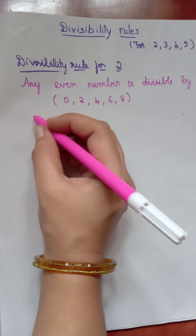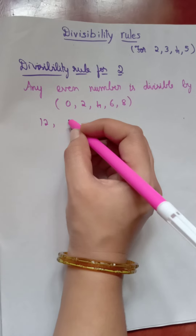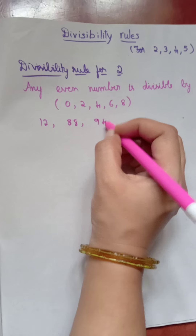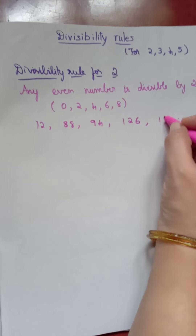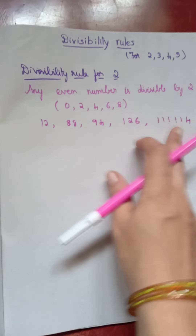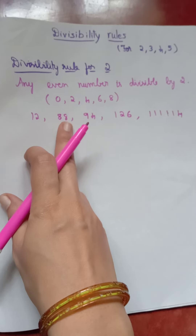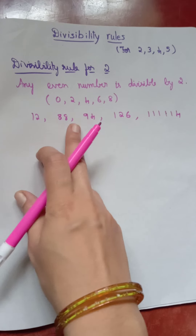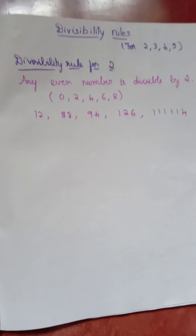When you take numbers like 12, 88, 94, 126, or 111114, the digit in the unit's place is an even number — 2, 8, 4, 6, 4. So, if the number in the unit's place is an even number, that number is divisible by 2.